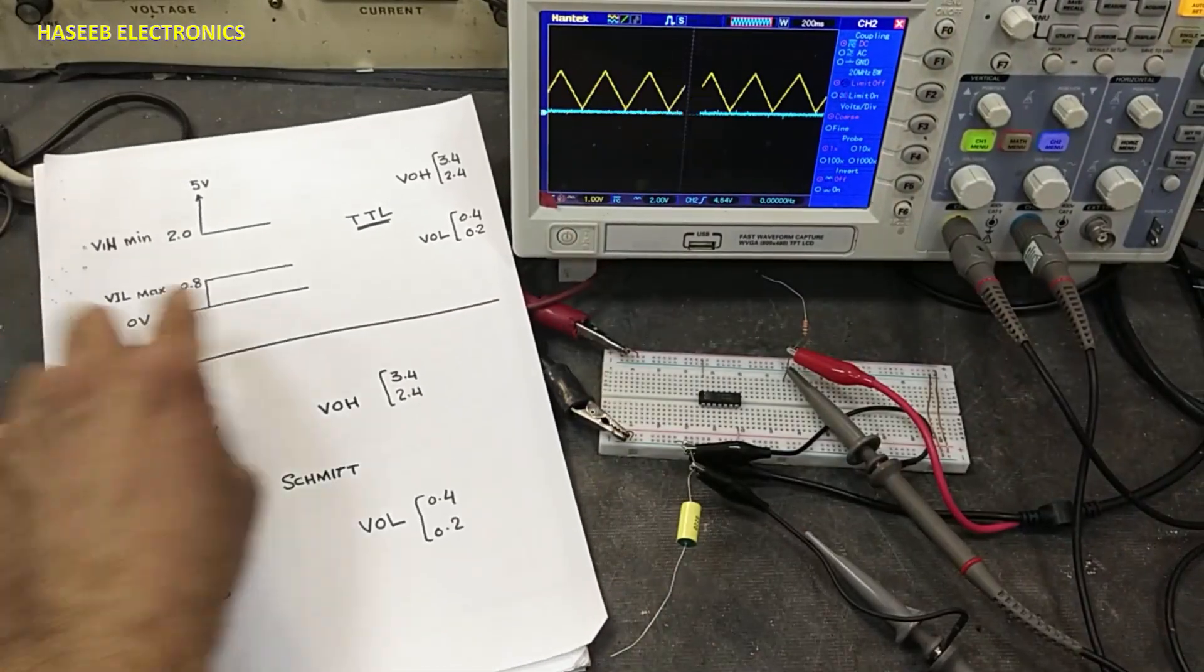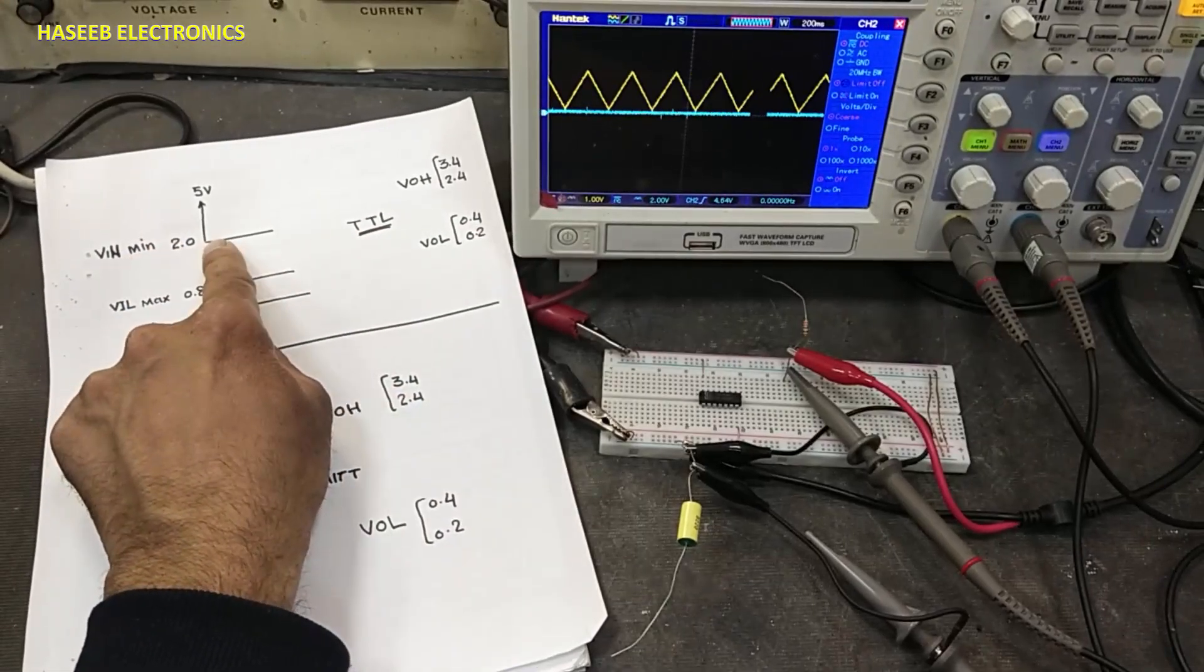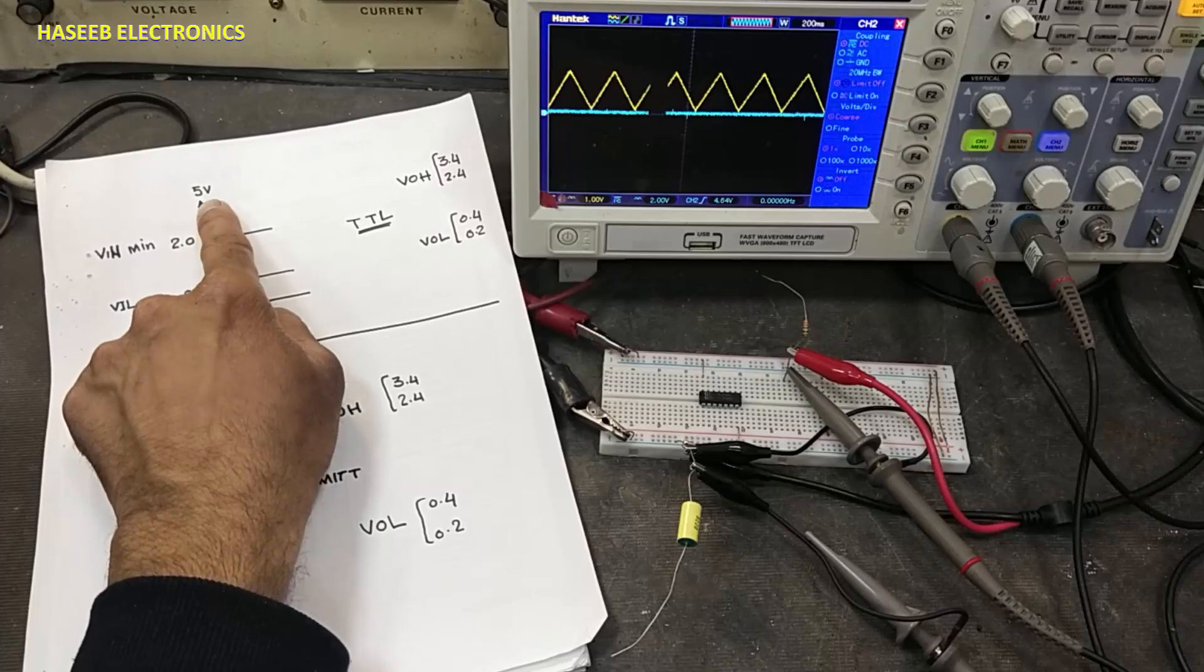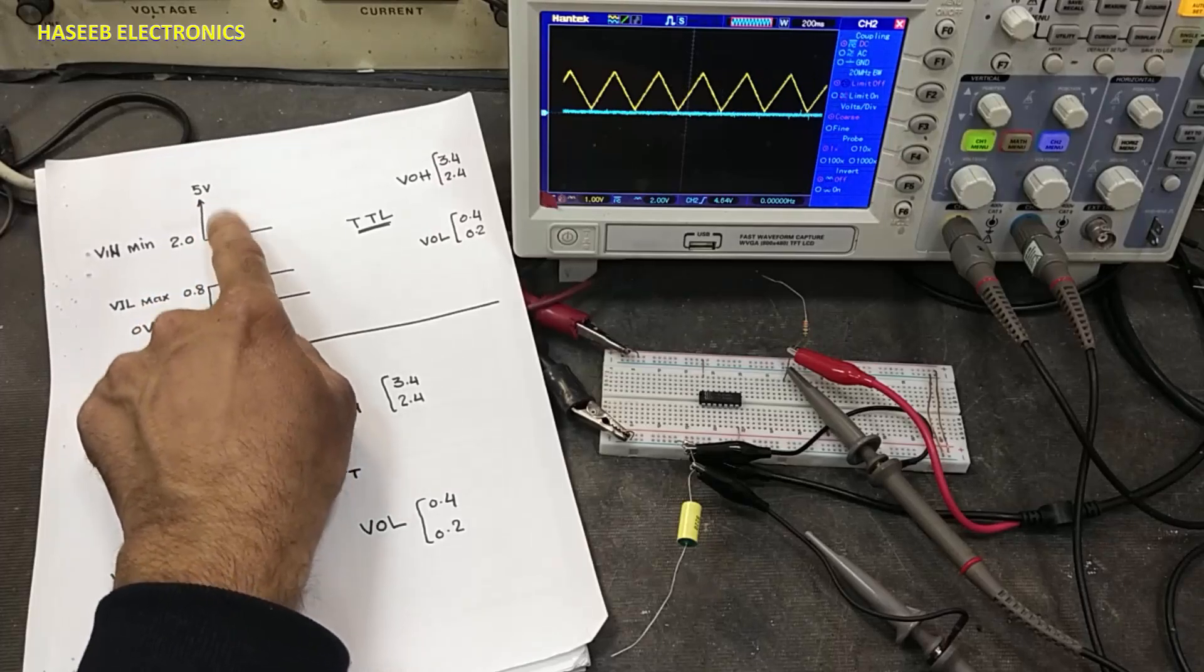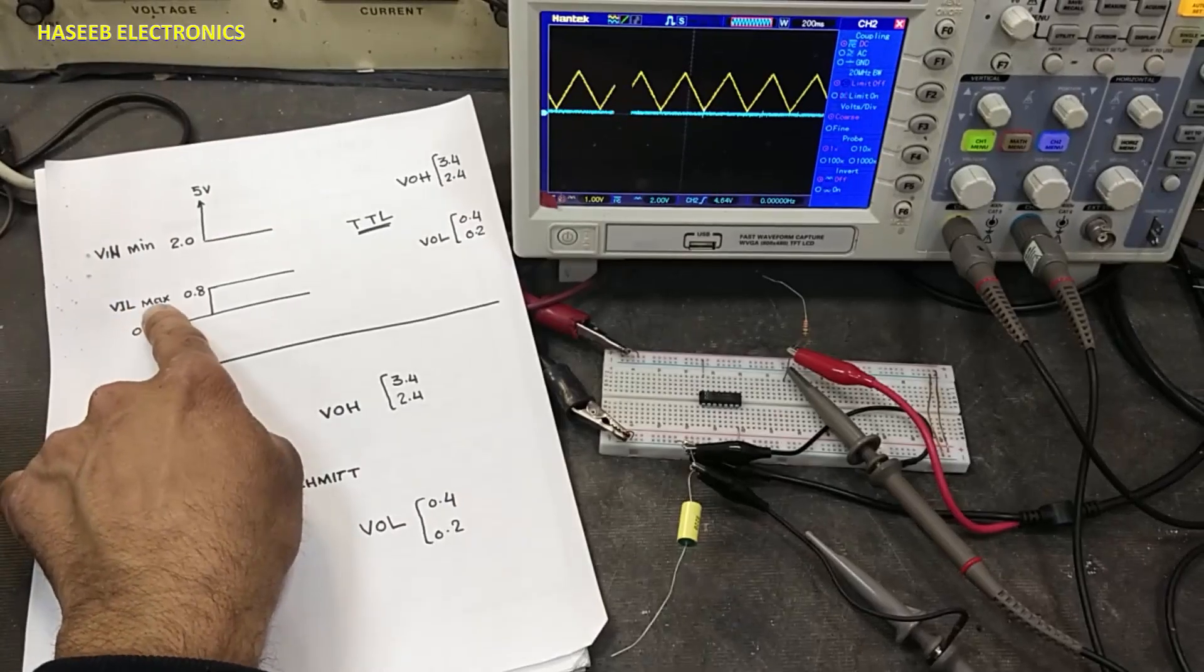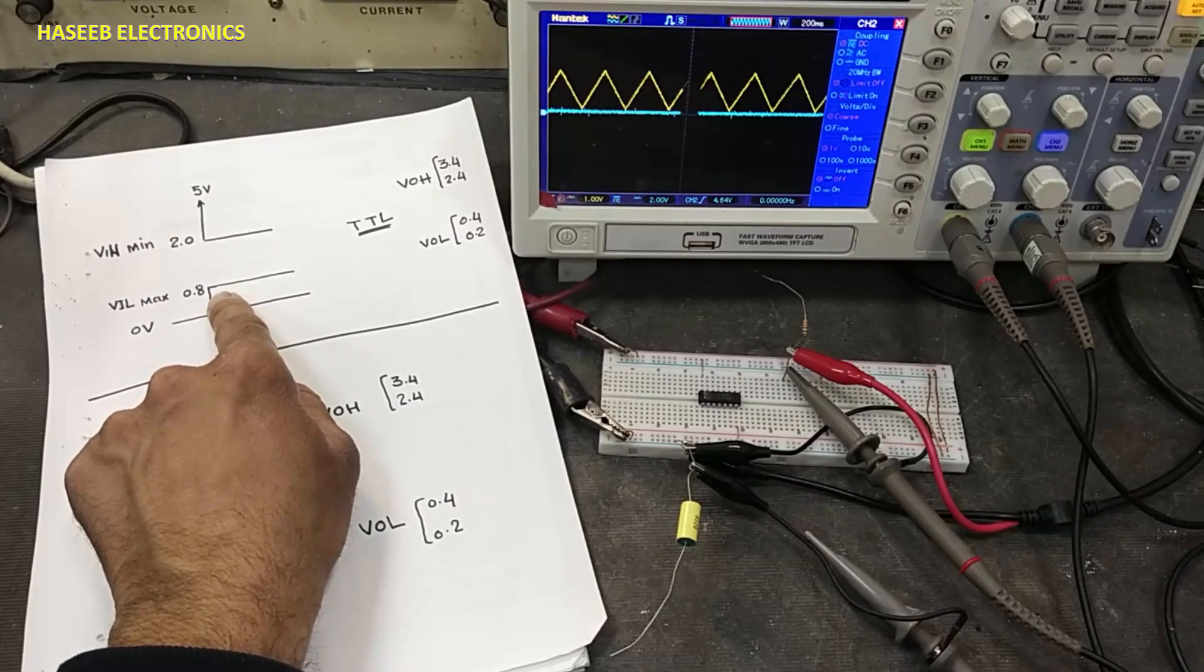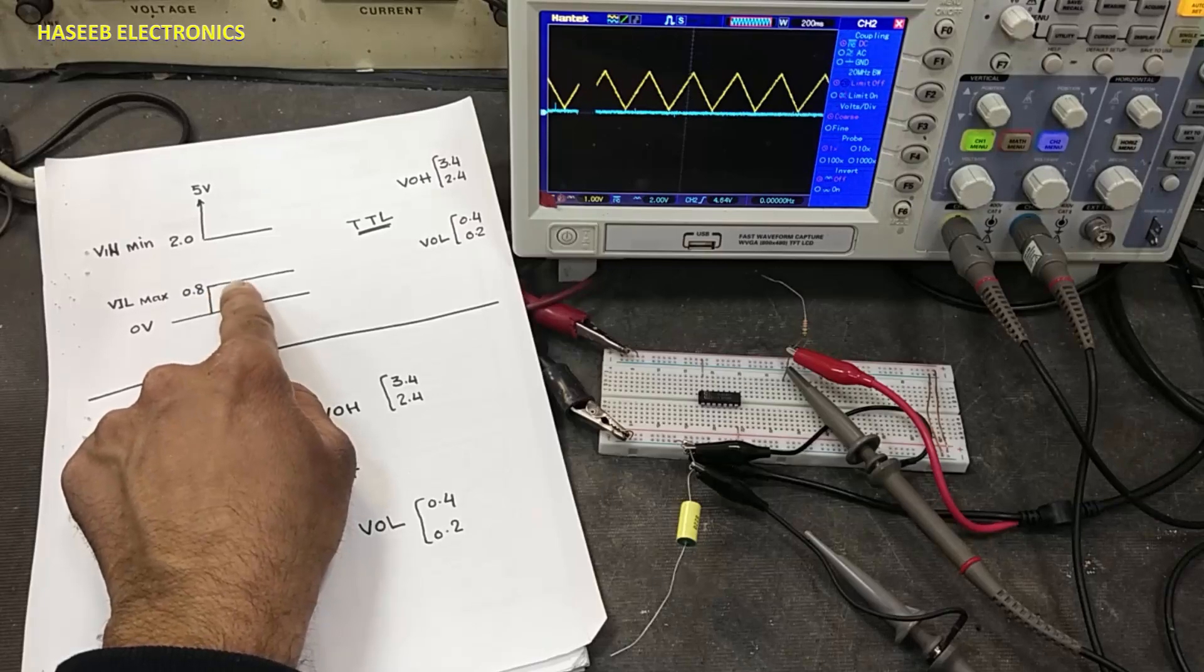When we discuss TTL levels, the TTL input high level starts from 2 volts up to 5 volts. 2 volts and above is considered logic high. VIL, the low level voltage, is logic low or logic zero below 0.8 volts.